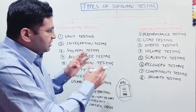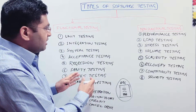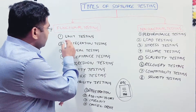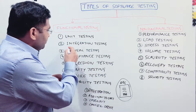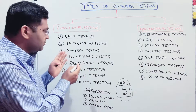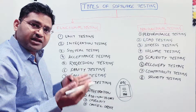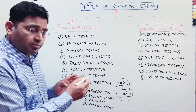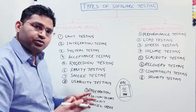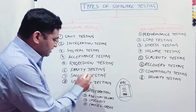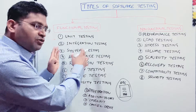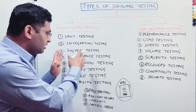Now, when we talk about other types of testing, unit testing — which is also one of the test levels — is also a type of testing. Unit, integration, system, and acceptance testing are all test levels as well as testing types. Then there is regression testing, which I'll cover in a complete separate tutorial. There is also sanity testing, smoke testing, and usability testing. All these testing types in the functional testing column are functional testing.